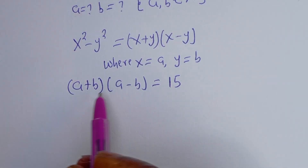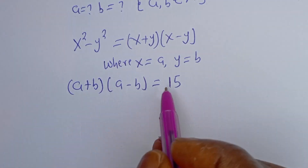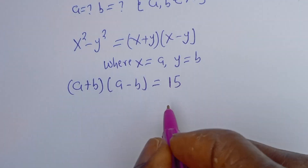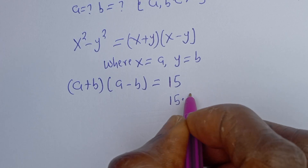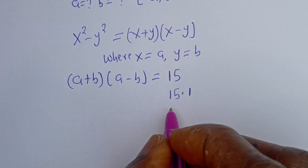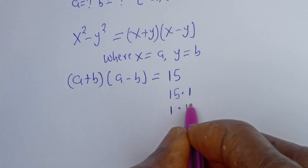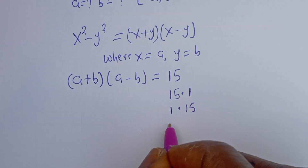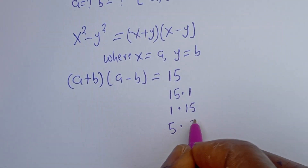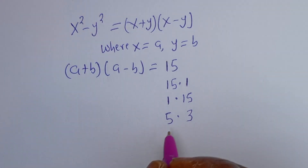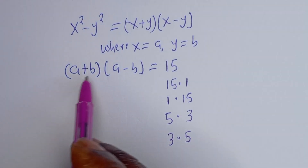Now if you look at this, you have (a + b) multiplied by (a - b), so we have the product of 15. The factor pairs of 15 are: 15 × 1, then 1 × 15, also 5 × 3, and 3 × 5.